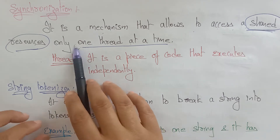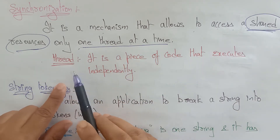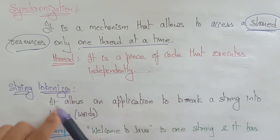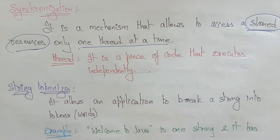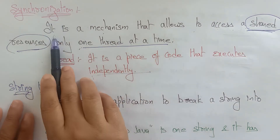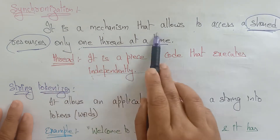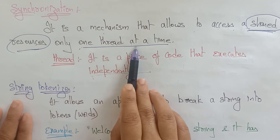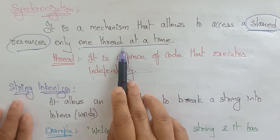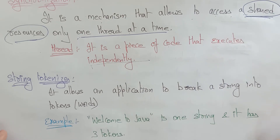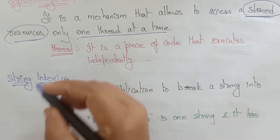So what is a thread? A thread is a piece of code that executes independently — it doesn't depend on any other code. So synchronization is a mechanism that allows access to shared resources, only one thread (a piece of code executing independently) at a time.